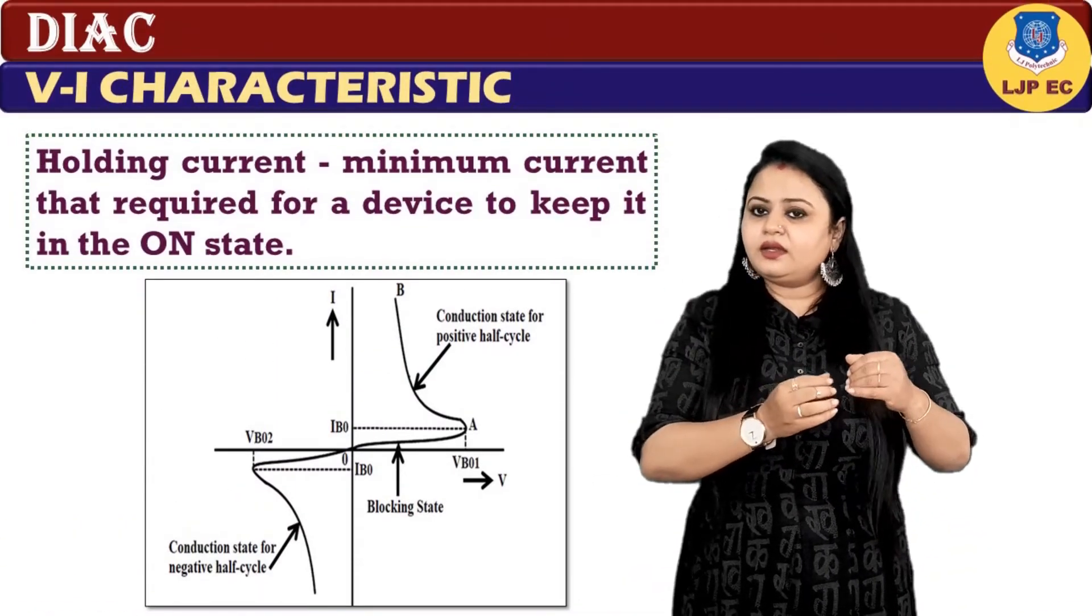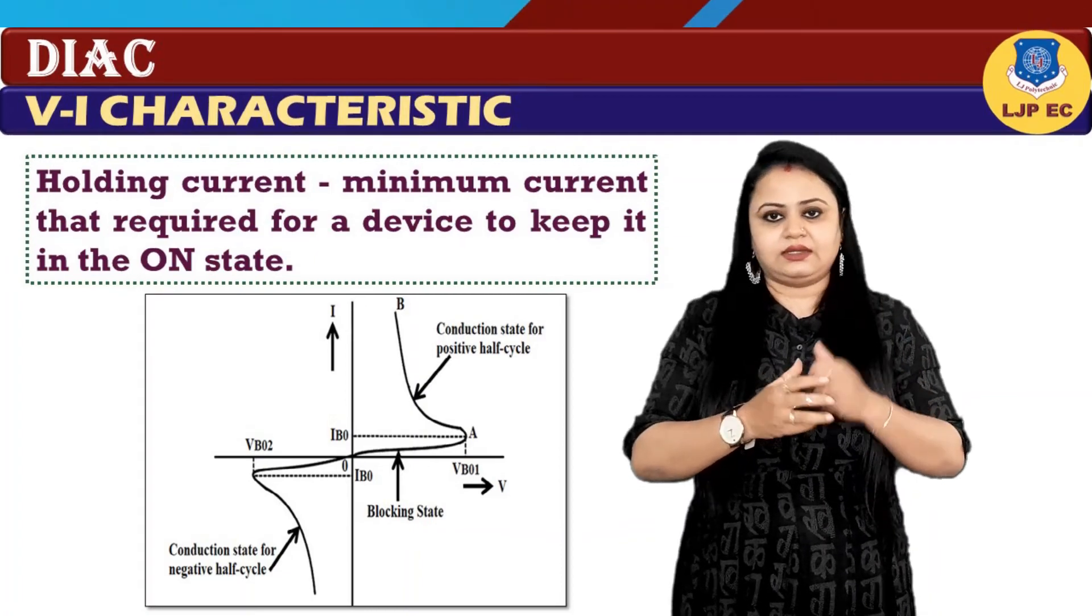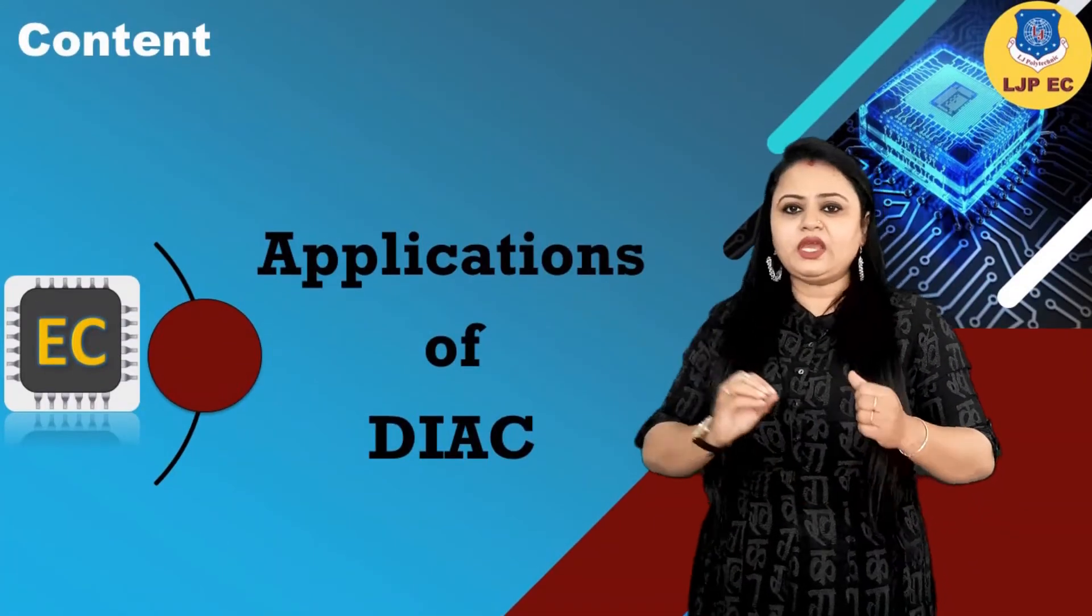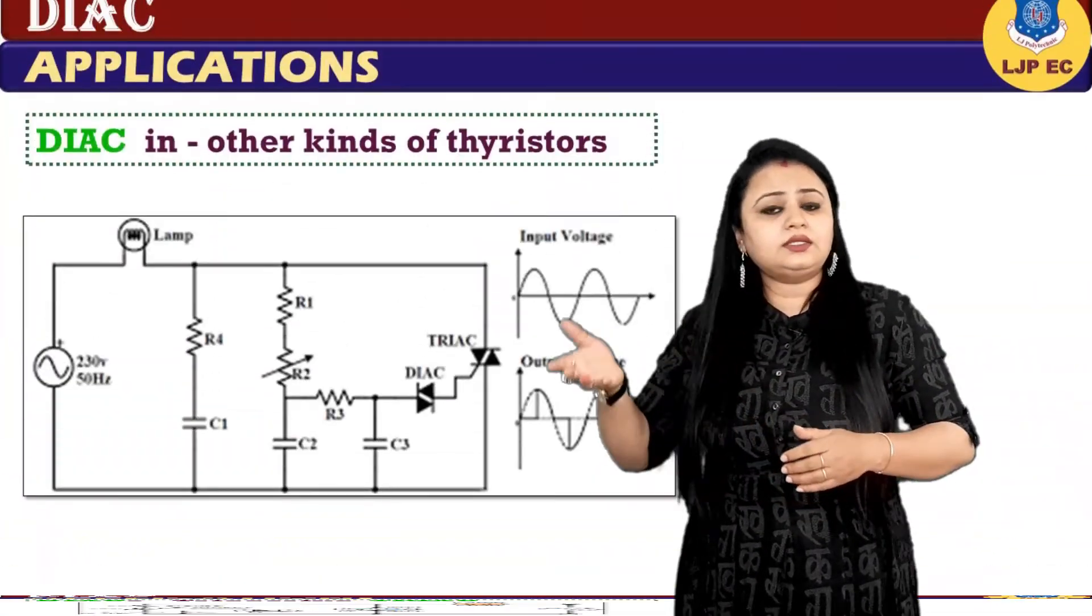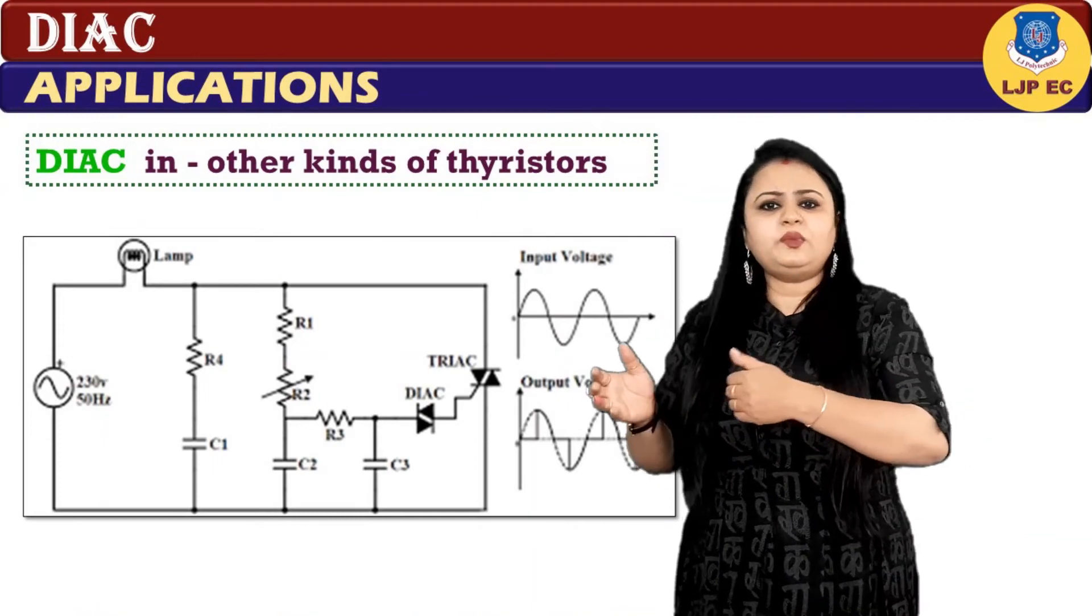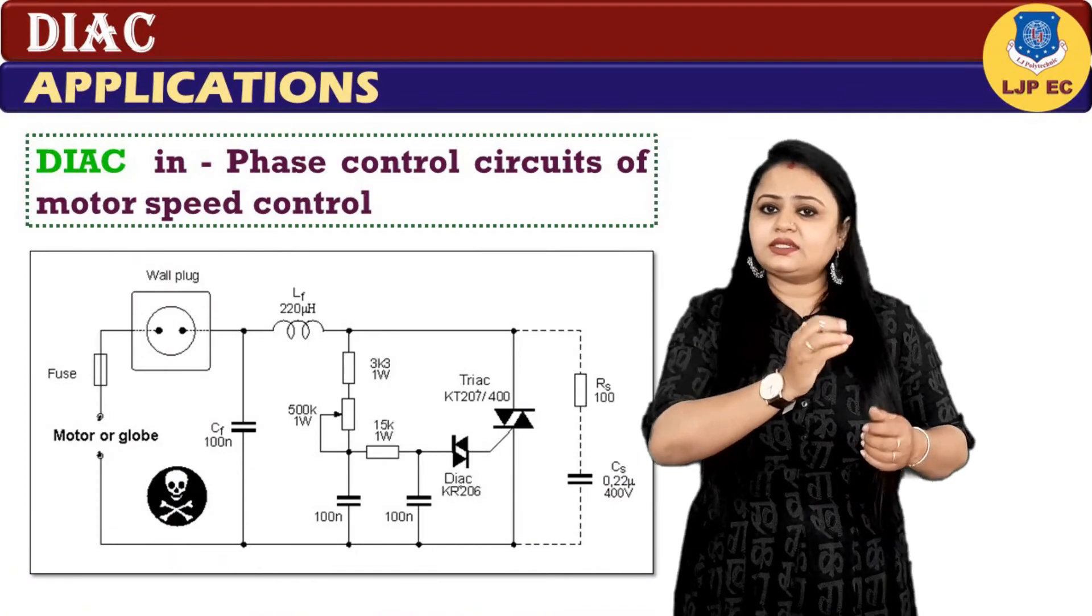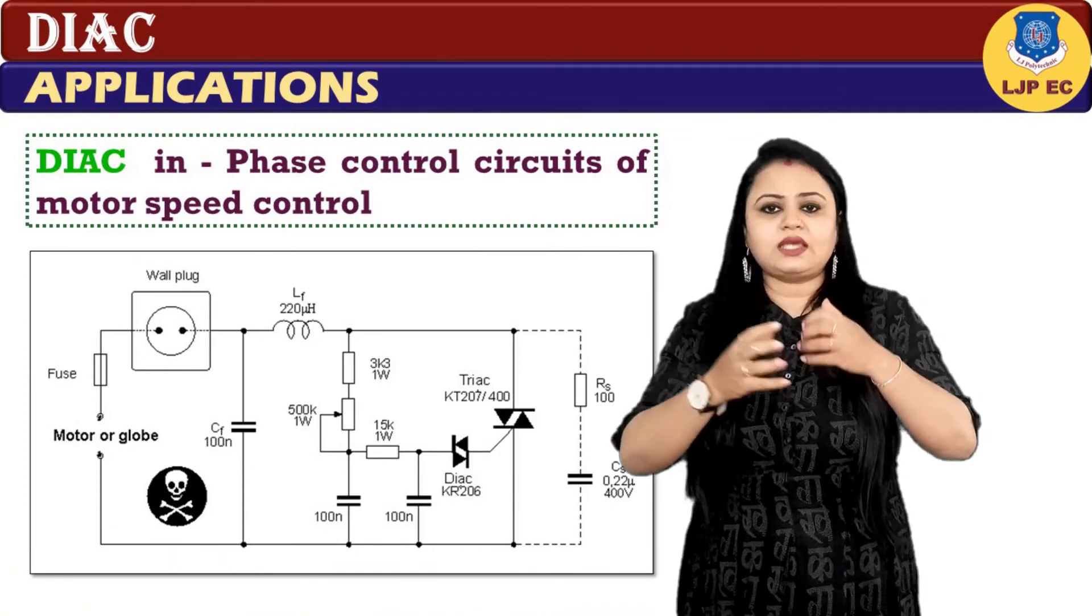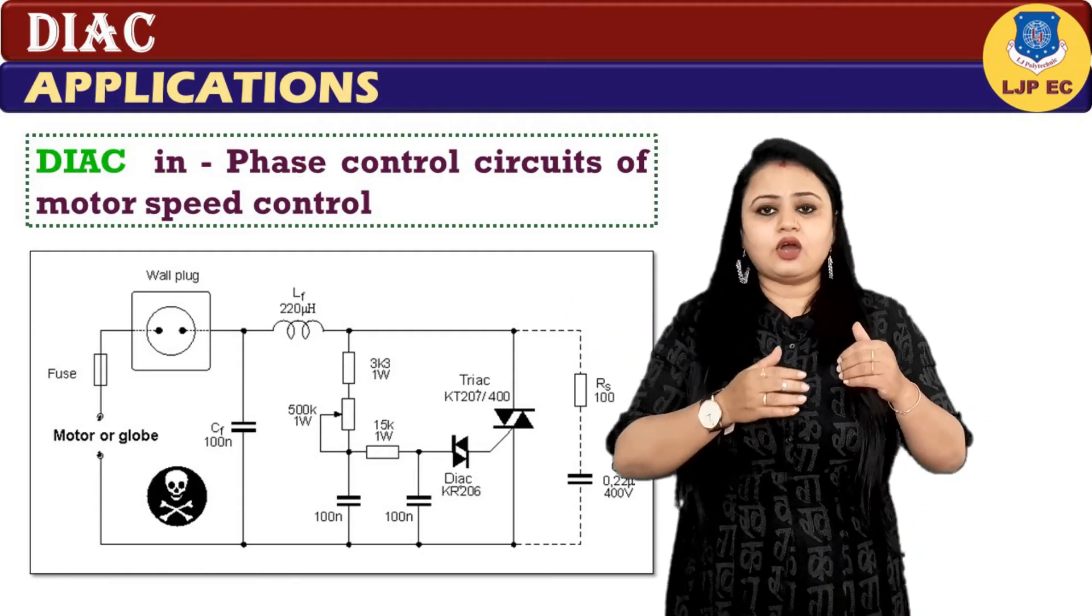Here are some applications of the DIAC. DIACs are used for triggering TRIACs or other kinds of thyristors. Apart from this, they do not possess many applications. The DIACs are used as a trigger device in various applications such as phase control circuits of motor speed control, light dimmers, heat controls, and many other control circuits.